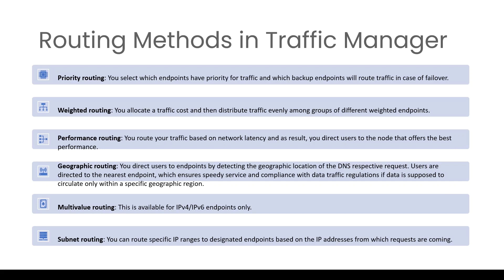In case of weighted routing, let's say you have two applications. You are going to assign some amount of weightage to each application, and that much amount of traffic will go to the particular application. In case of performance routing, if you have two applications, the load will be redirected to the nearest location.